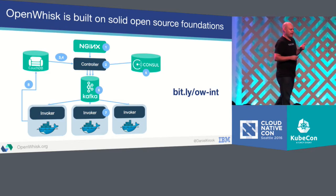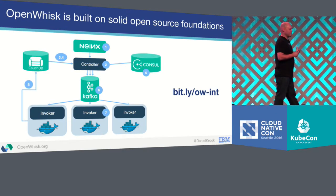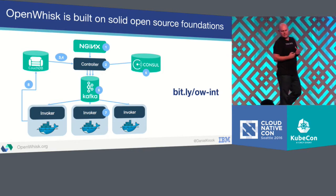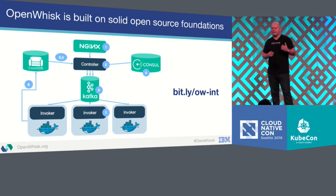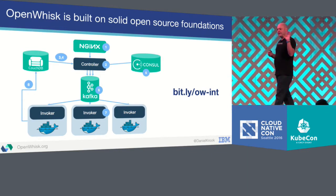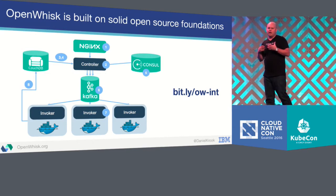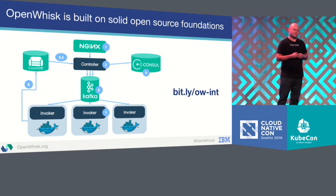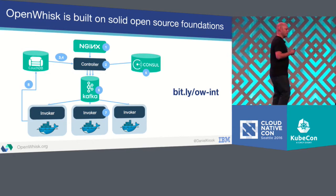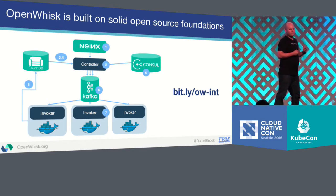Now, there are servers behind the serverless architecture. OpenWhisk is an open-source platform built on a lot of well-tested open-source projects, such as Nginx, CouchDB, Consul, and Kafka. And of course, those actions you write eventually are run on Docker containers on a host of nodes behind the scenes. You can learn more by following that link — there's a great article written by the core developer on how OpenWhisk works under the hood.